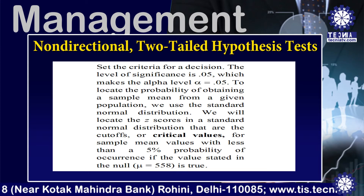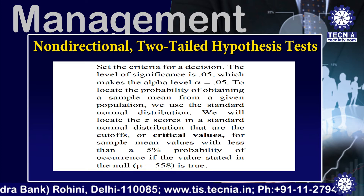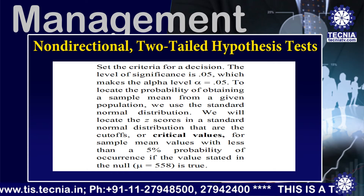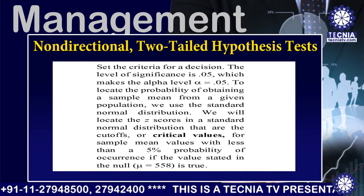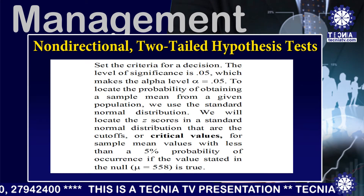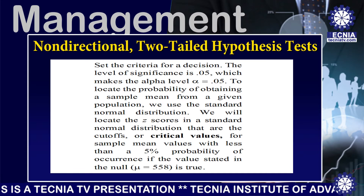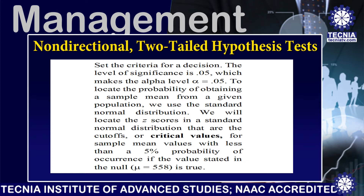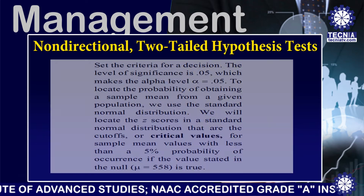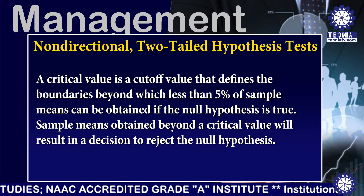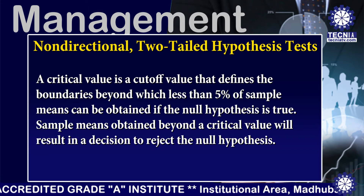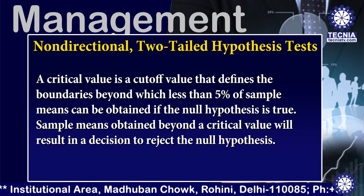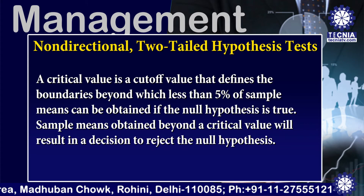Step 2 concerns setting the criteria for a decision. The level of significance is 0.05, so alpha = 0.05. To locate the probability of obtaining a sample mean from a given population, we use the standard normal distribution. We locate the Z scores that are the cutoffs or critical values for sample mean values with less than 5% probability of occurrence, if the value stated in the null (mu = 558) is true. A critical value is a cutoff value that defines the boundaries beyond which less than 5% of sample means can be obtained if the null hypothesis is true. Sample means obtained beyond a critical value result in a decision to reject the null hypothesis.